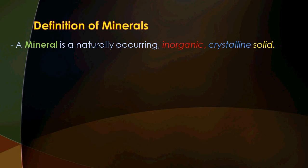Let us define a mineral. A mineral is a naturally occurring, inorganic, crystalline solid. First, it is naturally occurring — if a compound is synthesized in the laboratory, it is not classified as a mineral. It is inorganic — minerals are not organic. They are crystalline, meaning their internal structure is made up of well-arranged atoms in a geometrical atomic arrangement within their crystal structure. Crystalline does not mean their outer shape looks like a crystal, but inside the atoms are arranged in a particular manner.